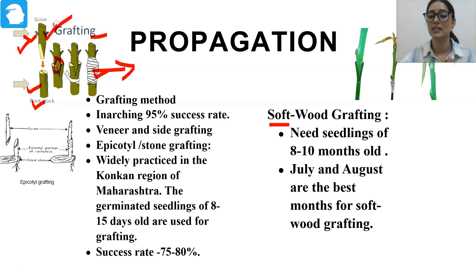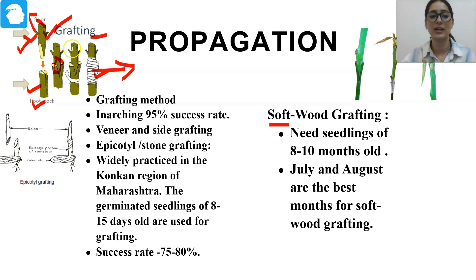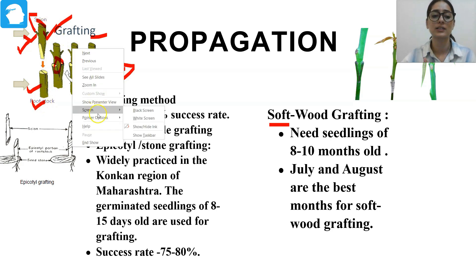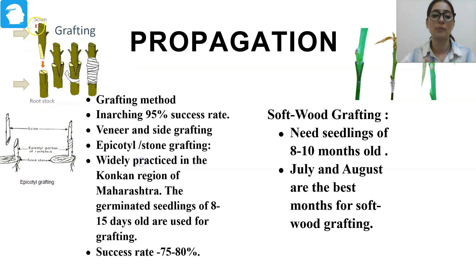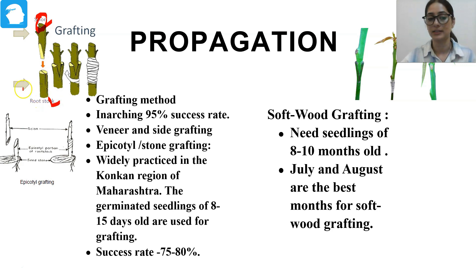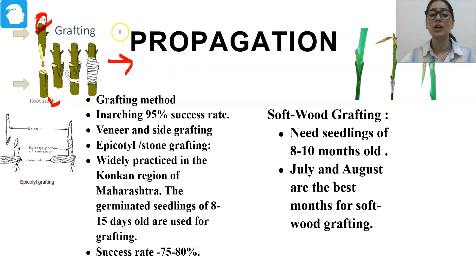For example, we want some qualities from the scion. The scion is taken from one variety and the rootstock is taken from another variety. We want some specific characters from one plant, so we take a scion from that plant and a rootstock from the plant in which we want to induce those characters. We combine these varieties and the resulting plant will have all those desired characters. That is called grafting — vegetative mode of propagation.